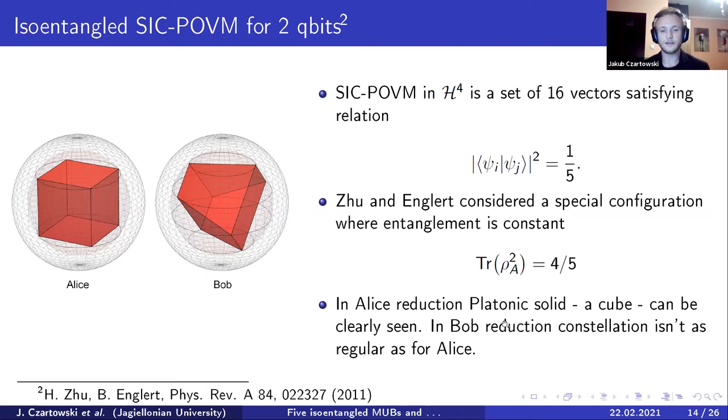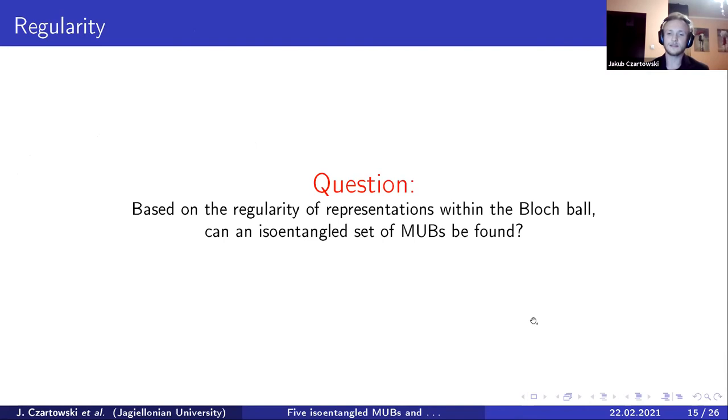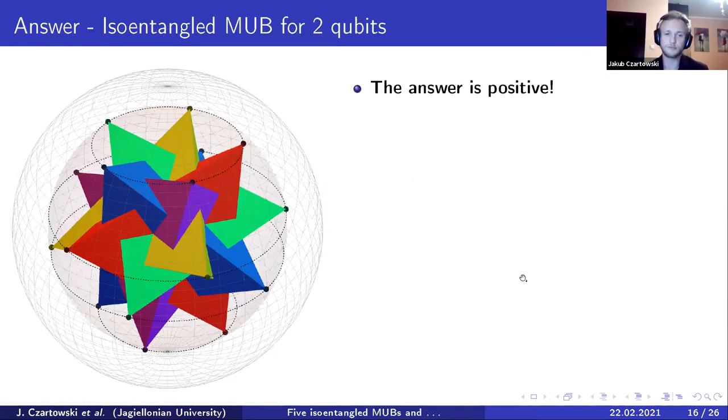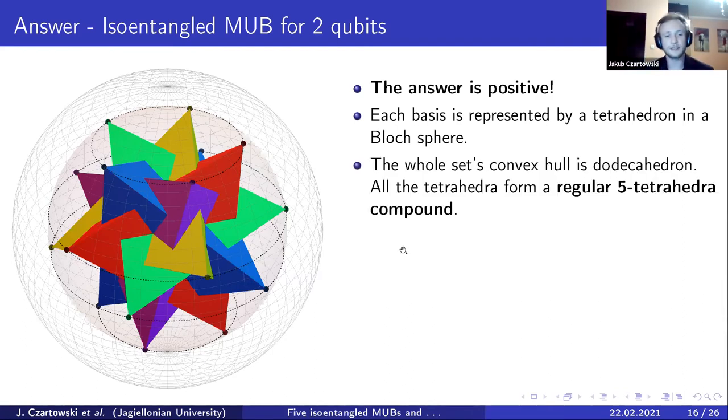This, taking this example, we can ask a very simple question, which is basically a geometric question. Can such a regularity be used in order to find an iso-entangled set of MUBs for dimension 4? And the answer is pretty much positive. The configuration is very simple. If you take any of the five tetrahedra that are visible in the image, you will get a single MU basis.